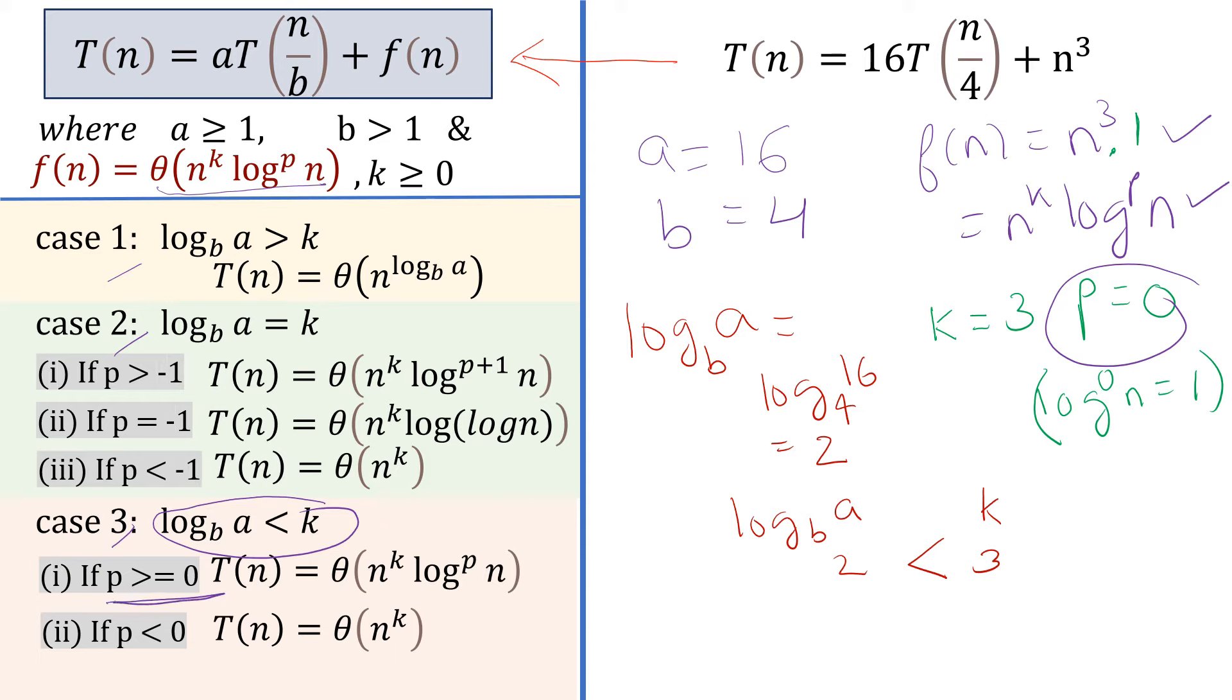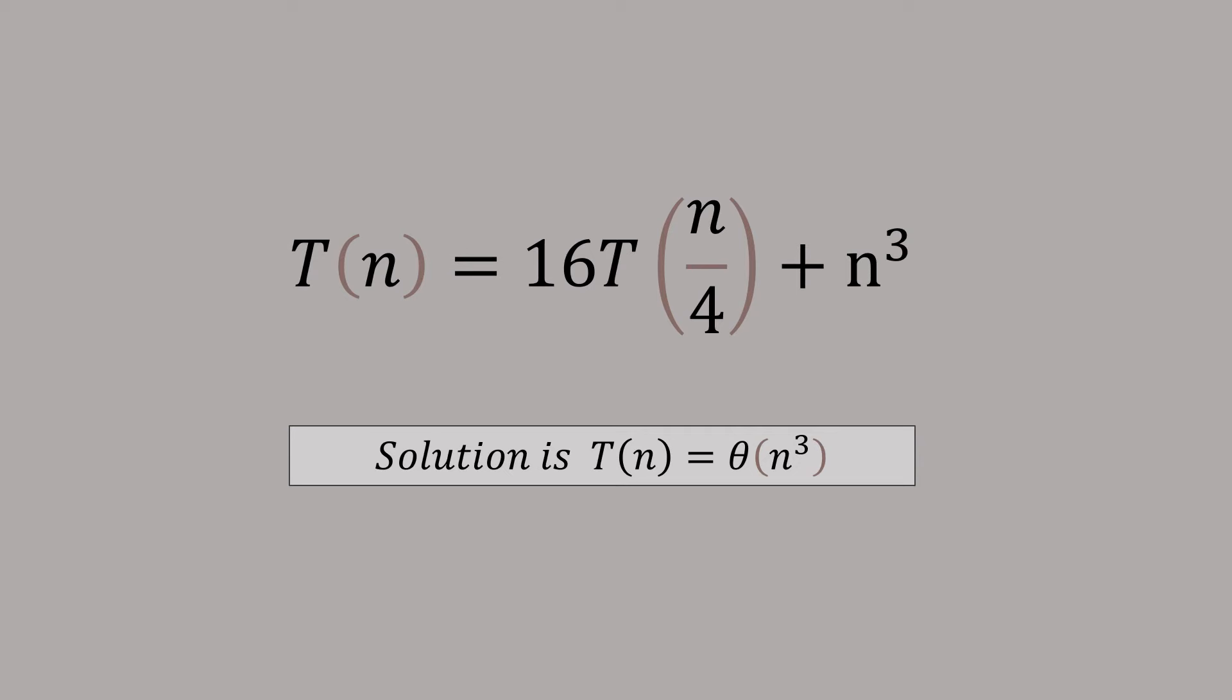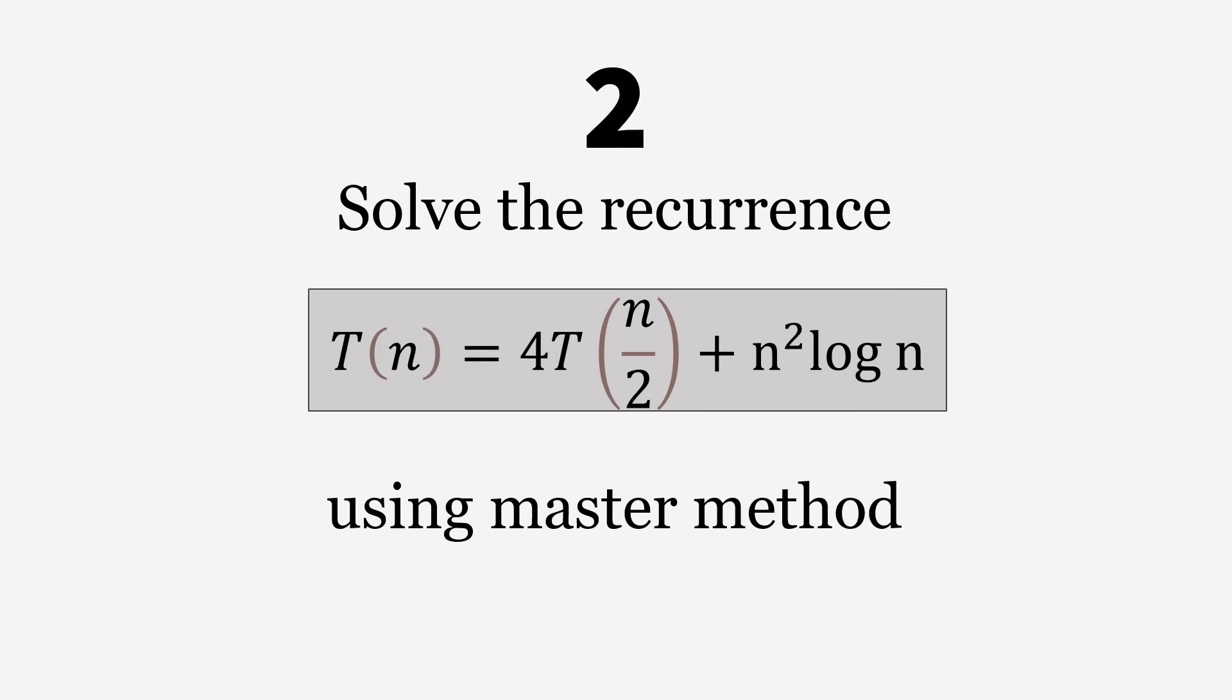Since p equals zero, it belongs to case three part one where p is greater than or equal to zero. We just put our value in this equation: T(n) = θ(n^k). k is 3 and p is 0, so log^0 n equals 1. This is our complexity, our final answer θ(n³). It was pretty simple. This is our solution.